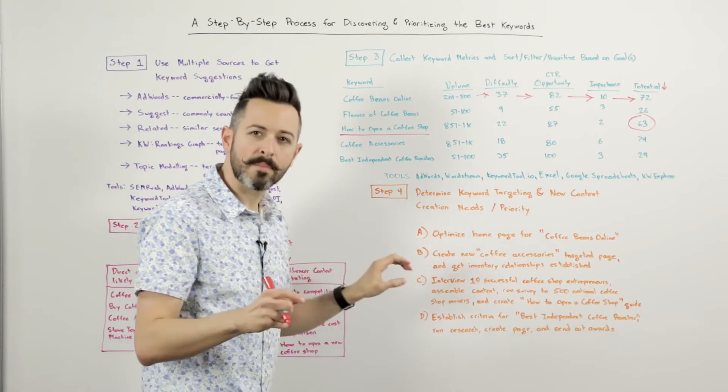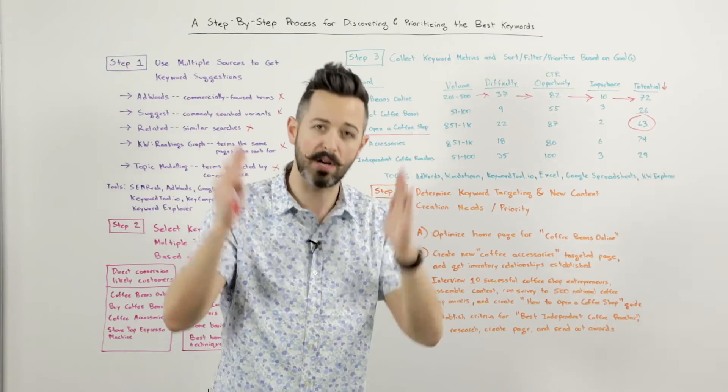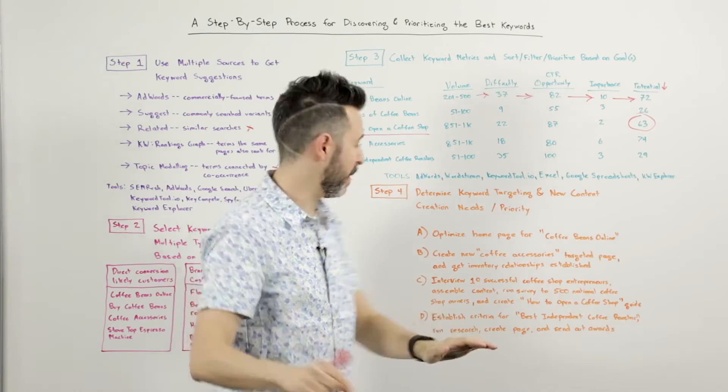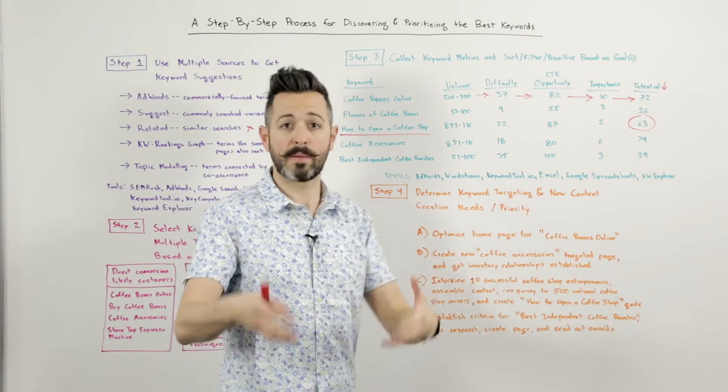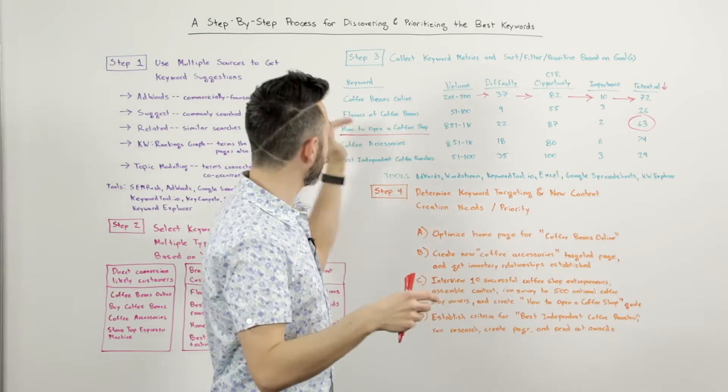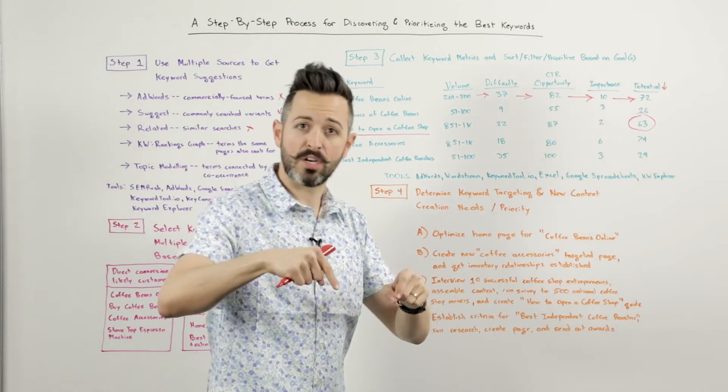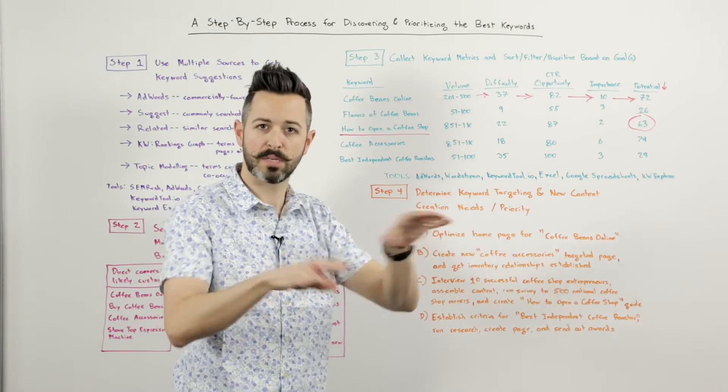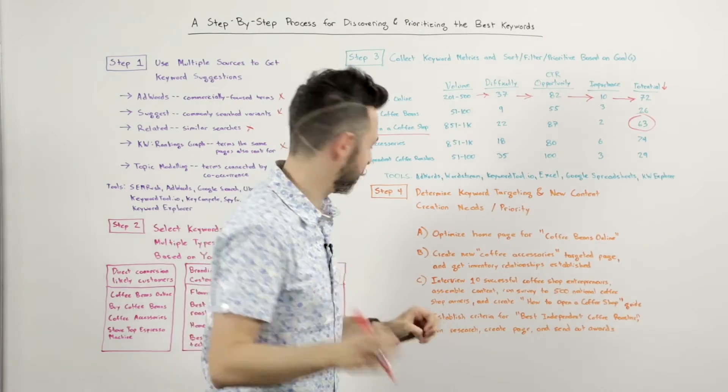A, I'm going to start by optimizing my homepage for coffee beans online. I've decided that's the best keyword that I can possibly target on there. That's what I'm going after. B, I want to create a new coffee accessories page. Maybe I didn't have one before. I see that that's a high opportunity, high potential keyword. I want it. I need to create a new page. Now I also need to go get inventory relationships established with all my accessory providers so that I can actually ship folks that stuff.